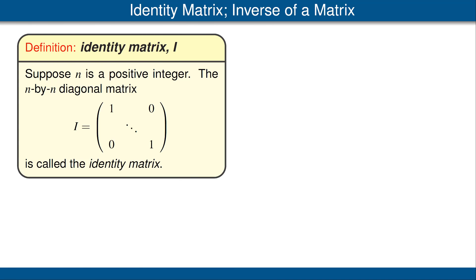Let's review some definitions about matrices. Suppose n is a positive integer. The n by n identity matrix is the diagonal matrix consisting of ones along the diagonal and zeros everywhere else. We denote this identity matrix by I. The value of n should always be clear from the context. Note that I also denotes the identity operator, and which meaning is intended should always be clear from the context.